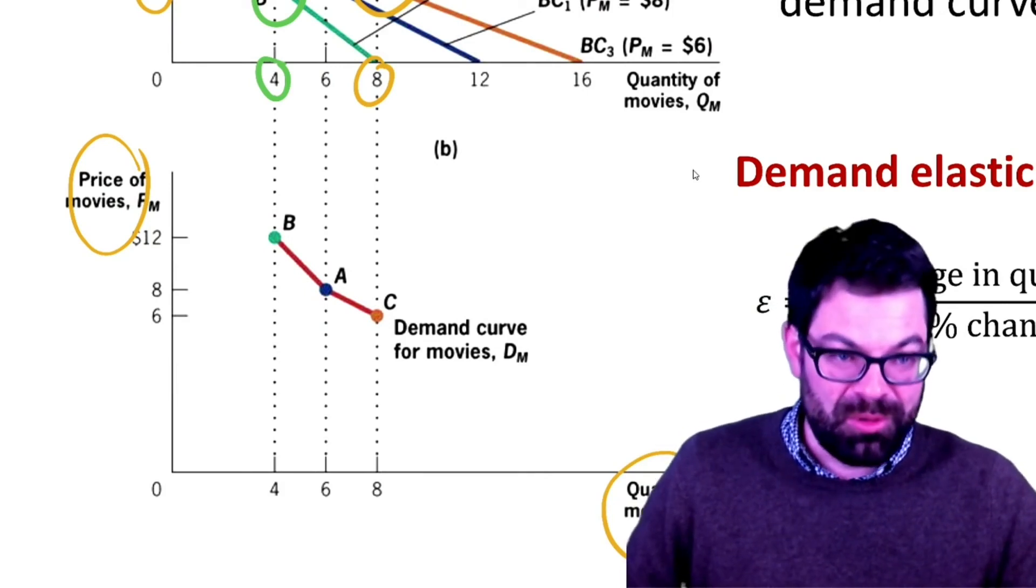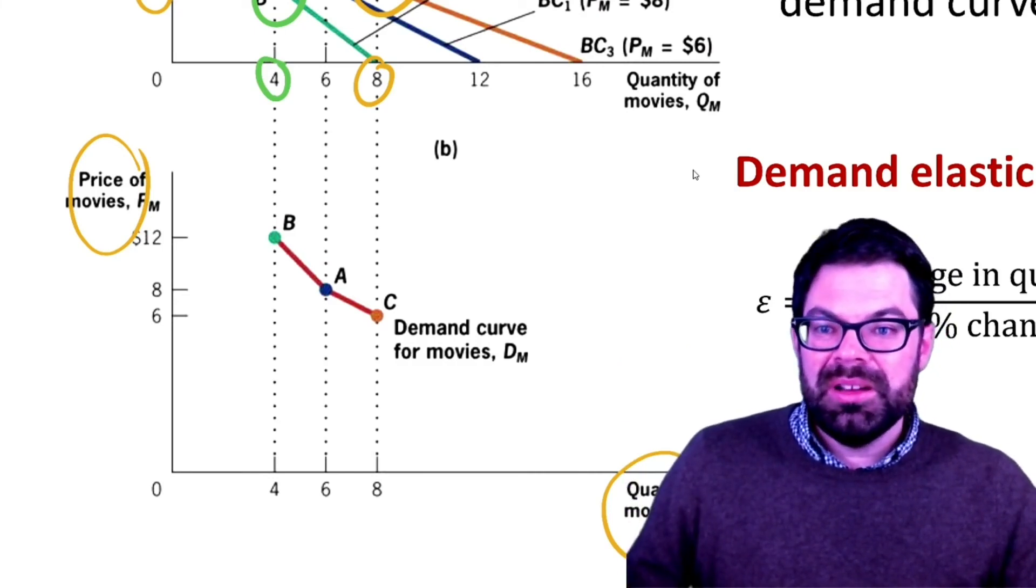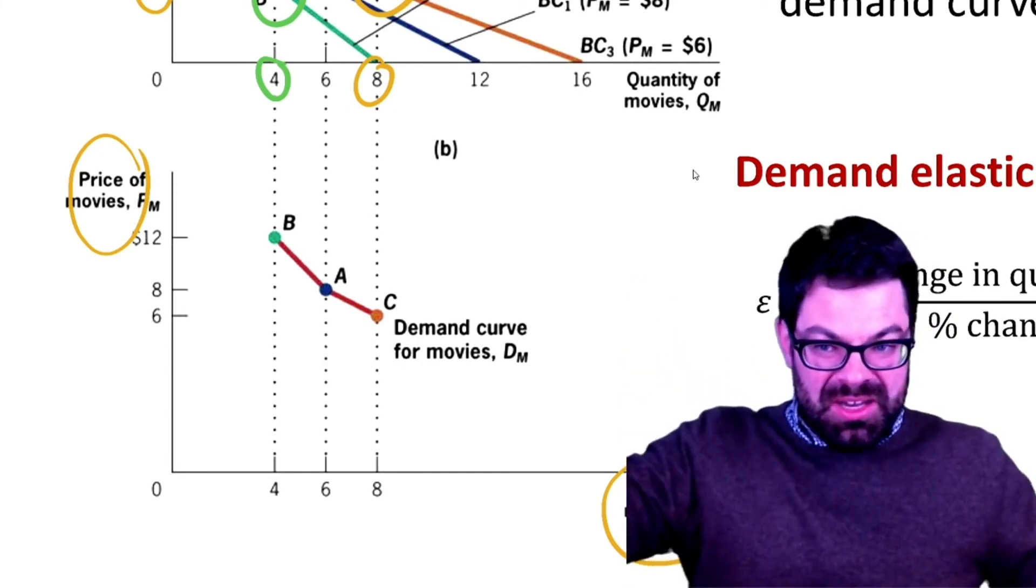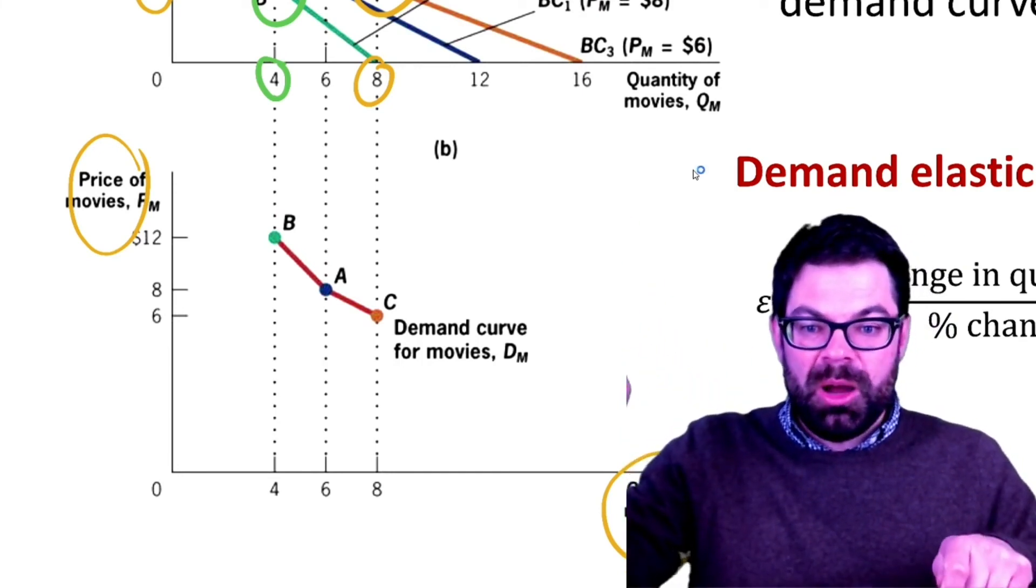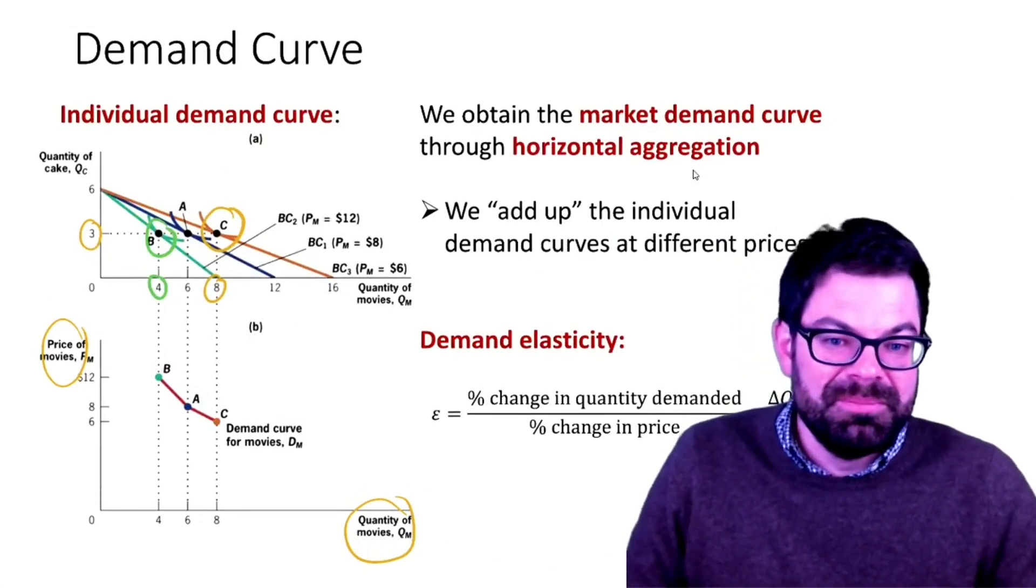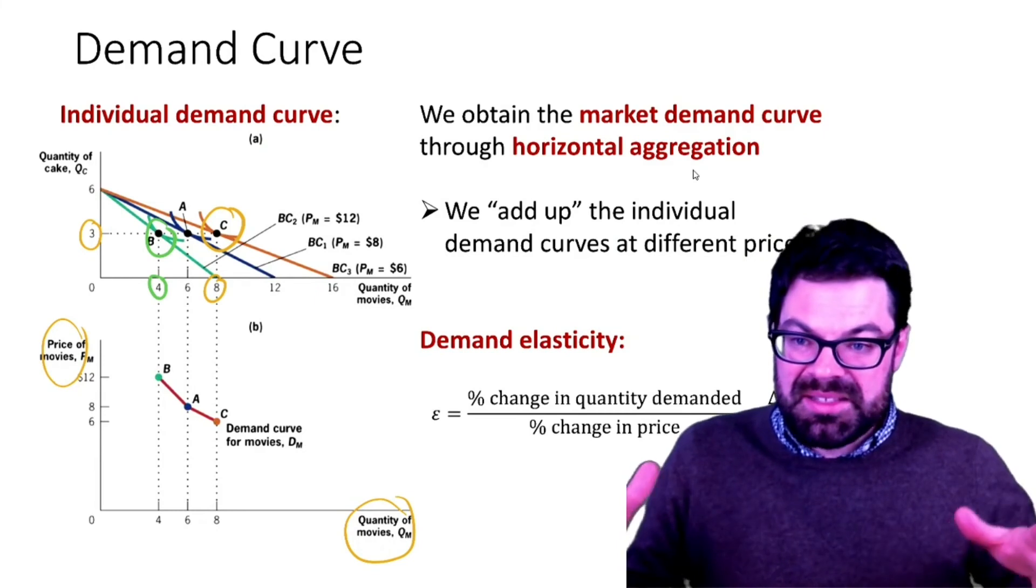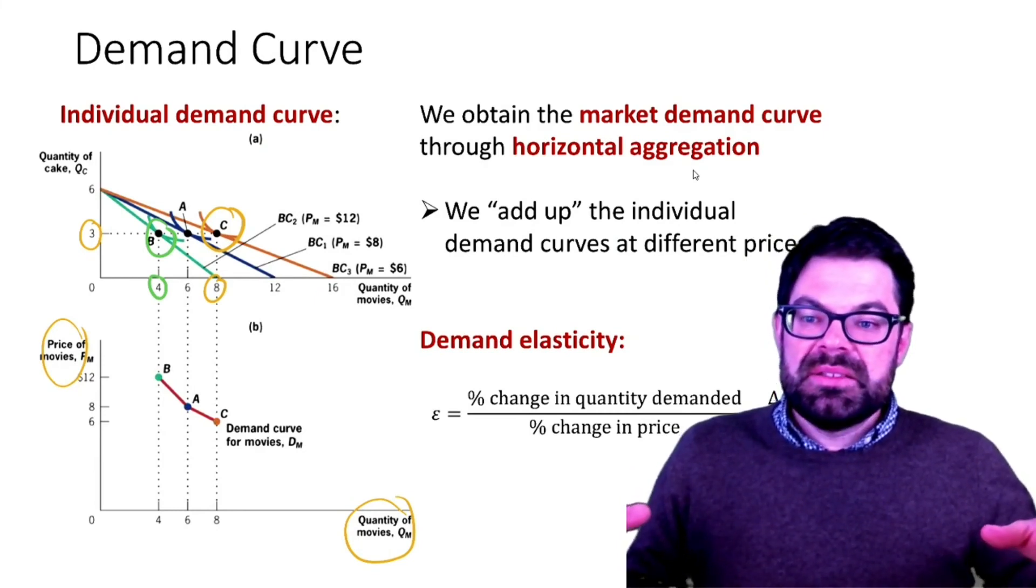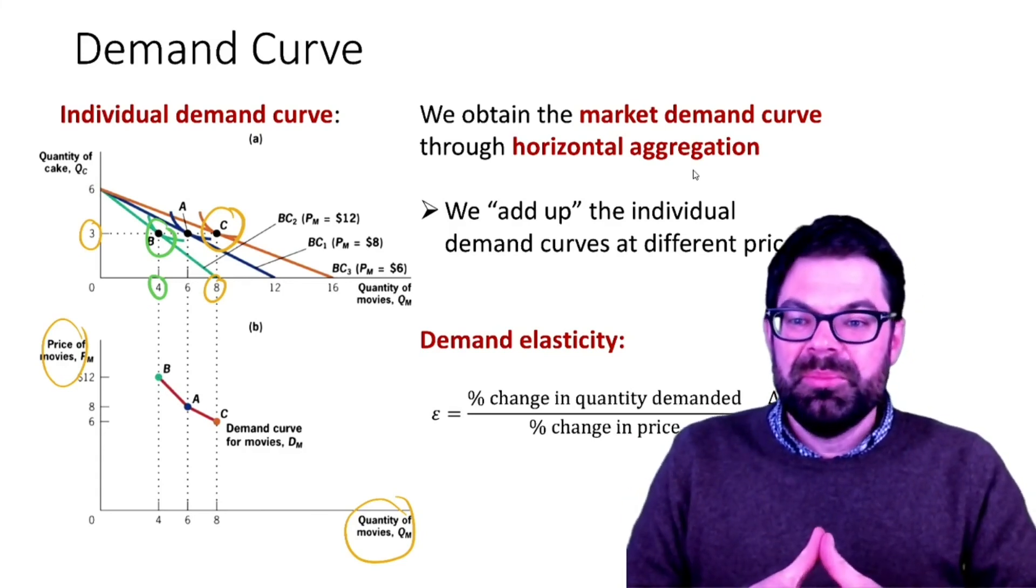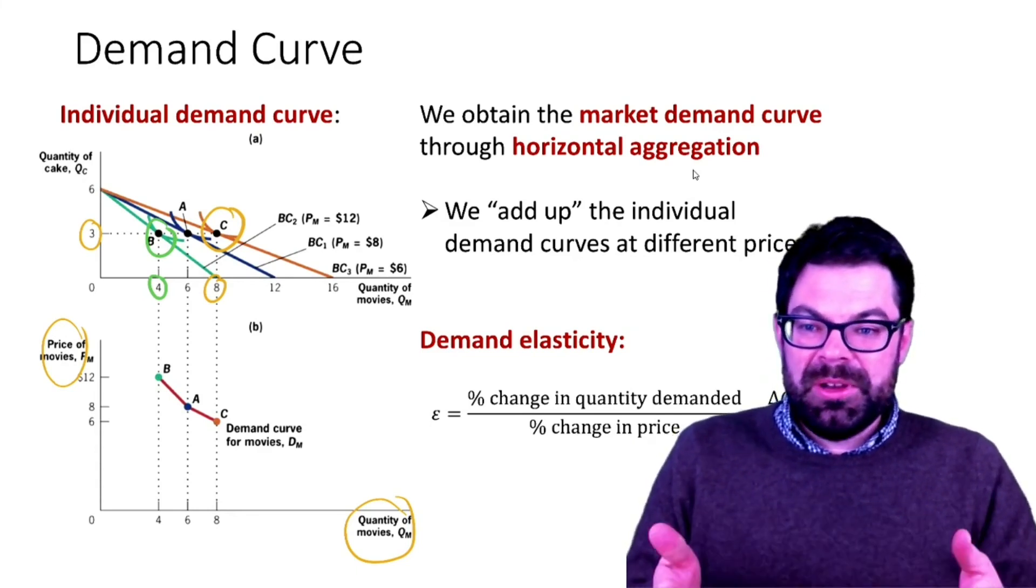We get a demand curve. That demand curve has a little kink here, but it's a downward sloping curve. If you imagine for the average consumer doing this for not only three price points but many, you will get the continuum of all demanded quantities of movies. This is how a demand curve emerges from utility maximization.